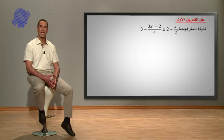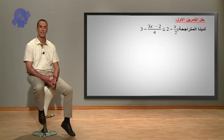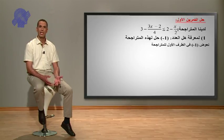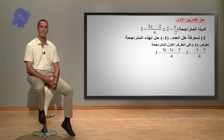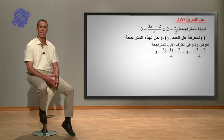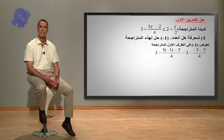لدينا الآن حل التمرين. لدينا المتراجحة: 3 ناقص (3X ناقص 2) على أربعة أصغر من أو يساوي 2 ناقص X على 2. أولاً لمعرفة هل العدد ناقص 1 حل لهذه المتراجحة، نعوض ناقص 1 في الطرف الأول للمتراجحة لتصبح 3 ناقص 3(ناقص 1) ناقص 2 على أربعة.